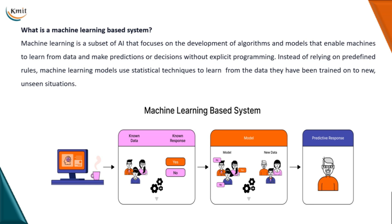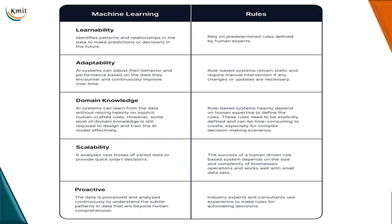Instead of relying on predefined rules like rule-based systems, machine learning models use statistical techniques to learn from data. They are trained on many new or unseen situations such that the predictive response is more accurate. There are many advantages of machine learning systems over rule-based systems that we will see as we proceed.